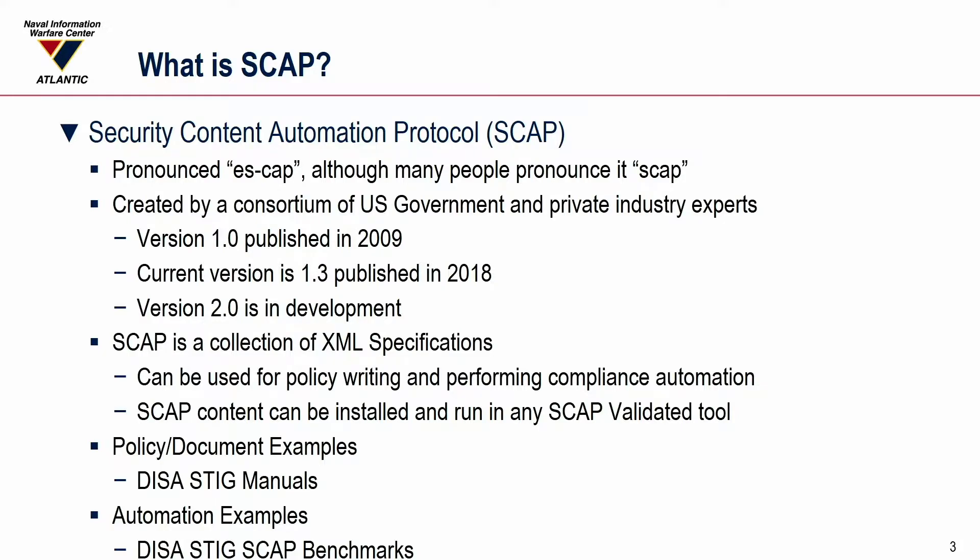Version 2.0 is in development, so it's actively maintained and advancing. SCAP is a collection of XML specifications primarily used for writing policy documents and for creating content to be used to perform automated compliance checks using SCAP validated tools. Examples of policy documents would be like the DISA STIGs — the actual manual — and the DISA STIG SCAP benchmarks.